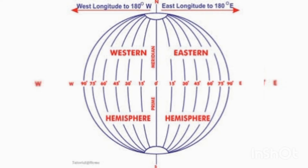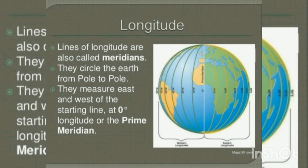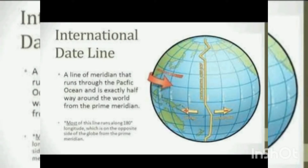Longitudes are lines that pass from the north pole towards the south and are also called as meridians. The line which lies at zero degree is called as Greenwich meridian. The line directly opposite to the Greenwich meridian is called as the international date line, which is the 180 degree meridian.